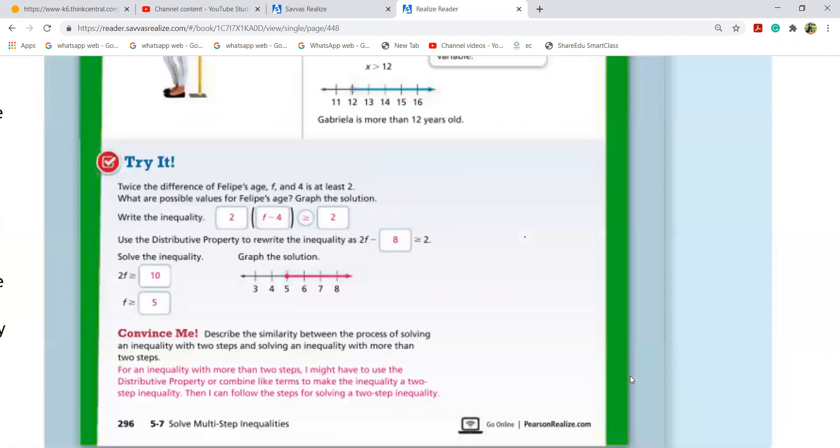Twice, the first question here in Try It. Twice the difference of Philippi's age, f, and 4 is at least 2. Difference means f minus 4. Twice their age. Let the age be f. Twice the difference means twice of something. What is the age? It is difference of Philippi's age, f, and 4. Difference means this. This means f minus 4. Twice means two times. Two times. Did you get it?